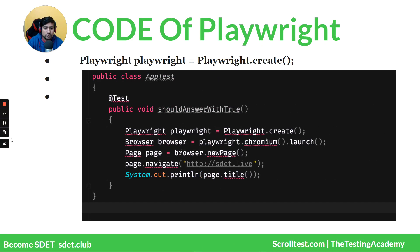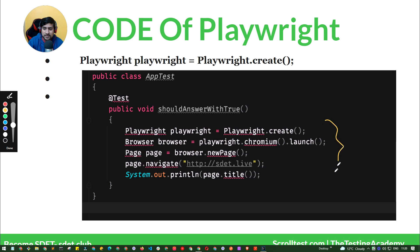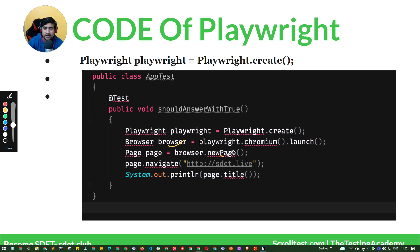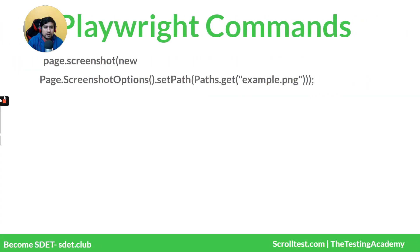Let's understand the code again. We create a Playwright object using the static method Playwright.create(). We launch Chrome by calling the Chromium launch function, which takes arguments — you can specify headless mode, slow motion, and other options. Once the browser is launched, we create a new page, navigate to a URL like the testing academy live page, and print out the title. That's the simple sample code.